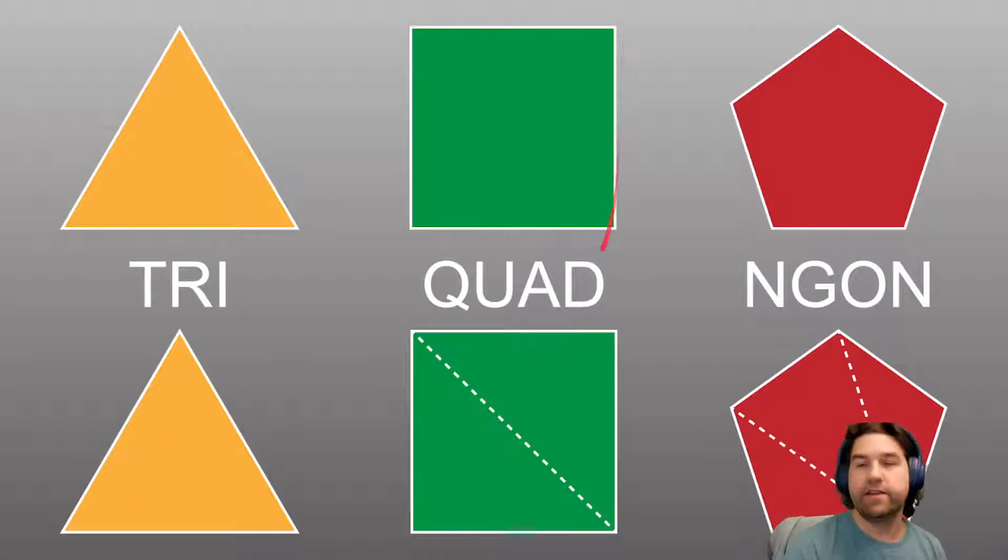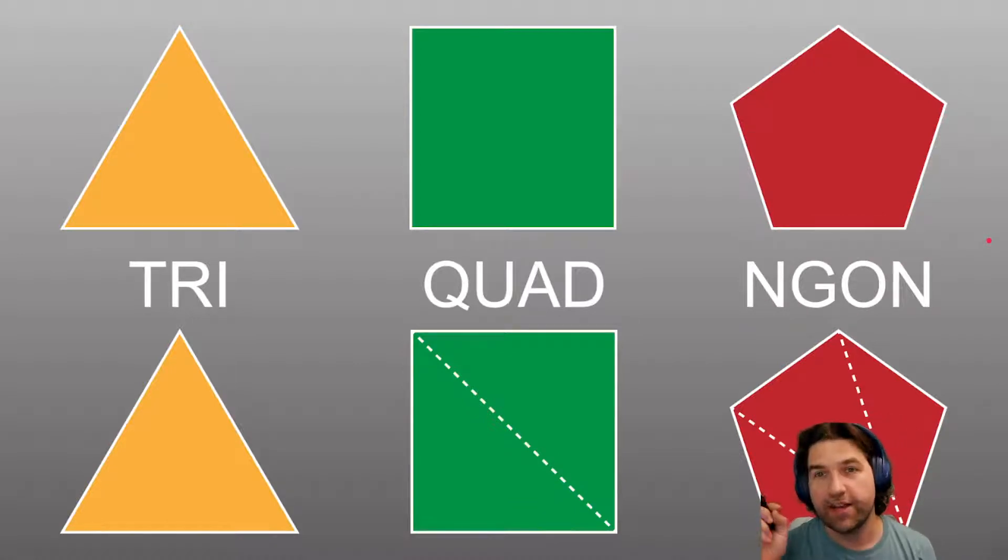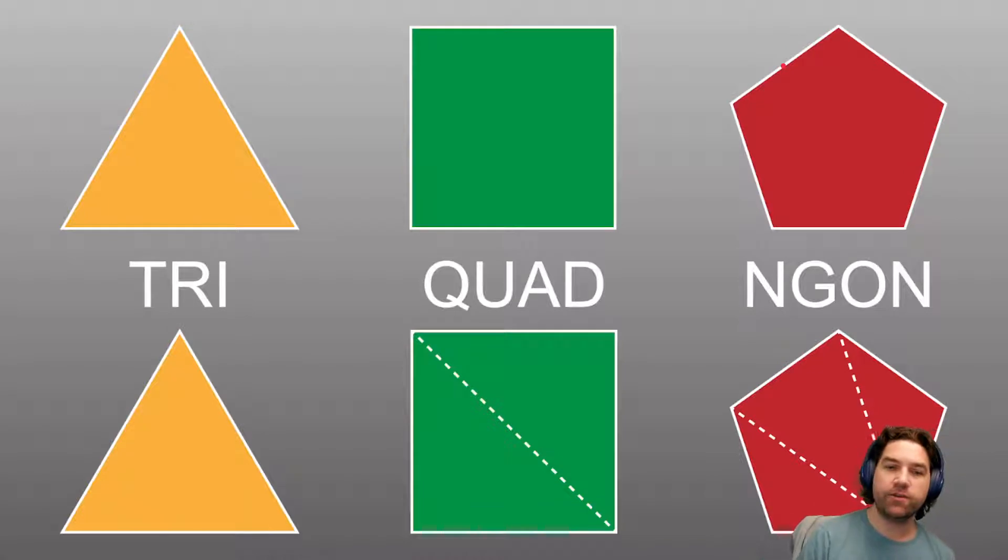The quad is four-sided objects, and this can be any kind of twisted configuration. It doesn't have to exactly be a square, although we like to keep them as square as possible because they divide very evenly and very cleanly. And then we have the N-gon, which is anything of N number of sides that is more than four.